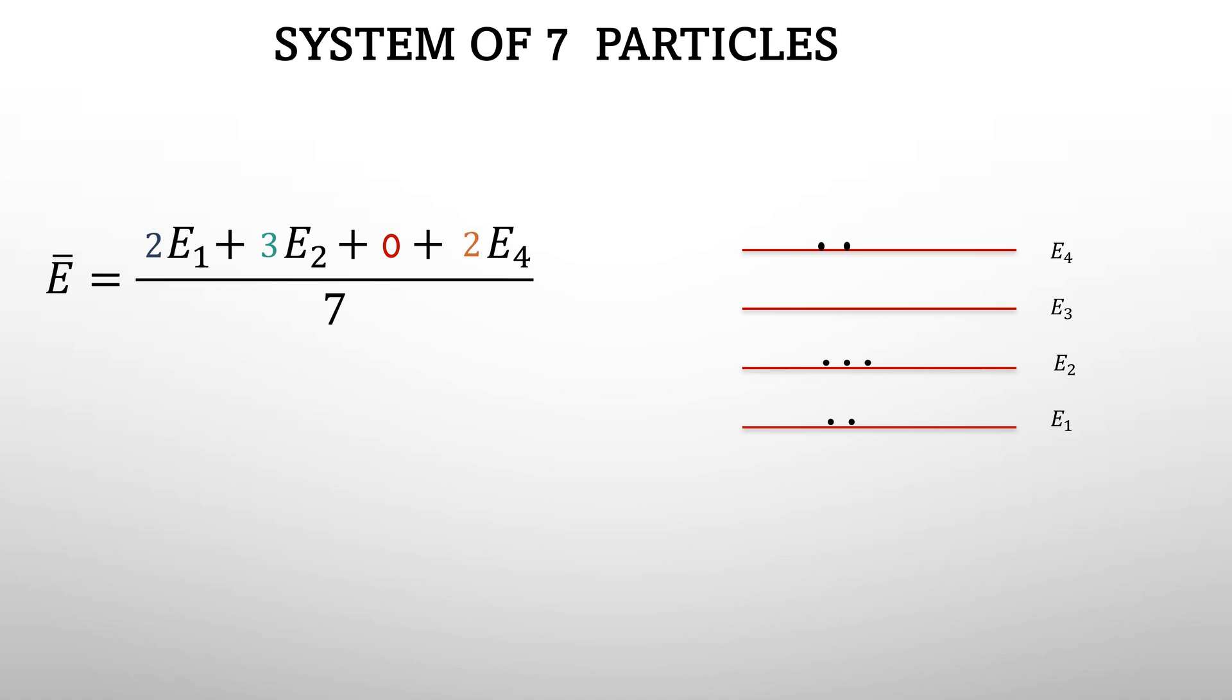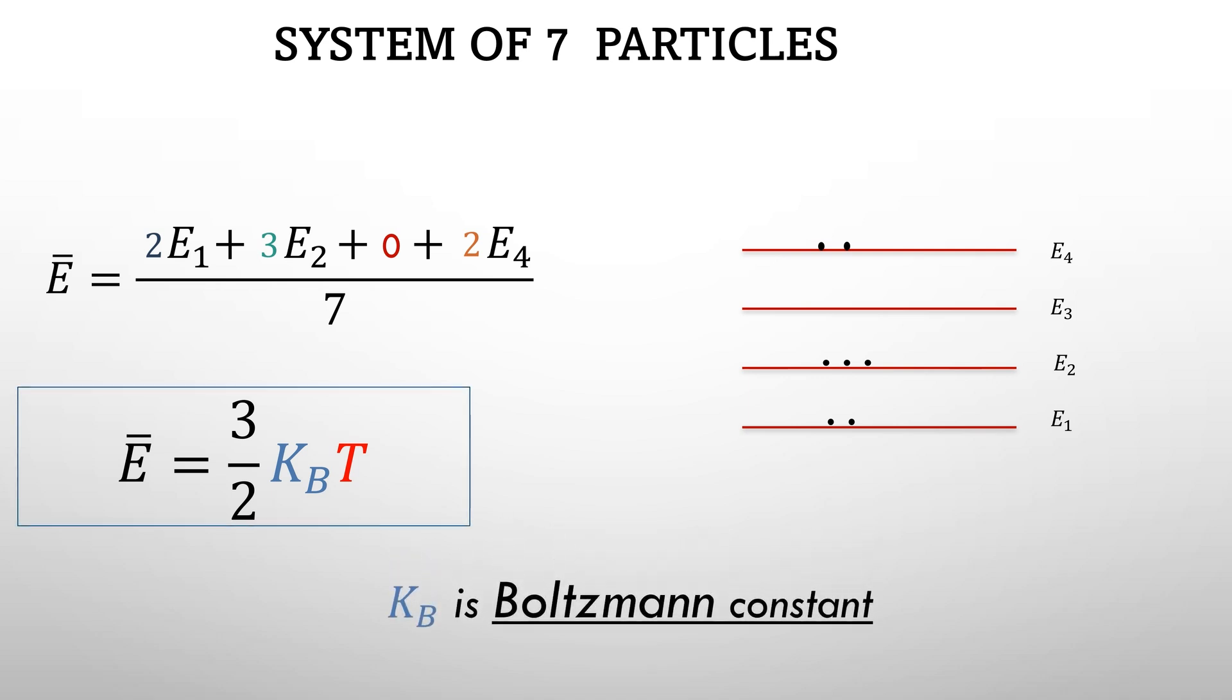Now temperature is related to energy of the system by equation 3/2 times KB times temperature, where KB is the Boltzmann constant.